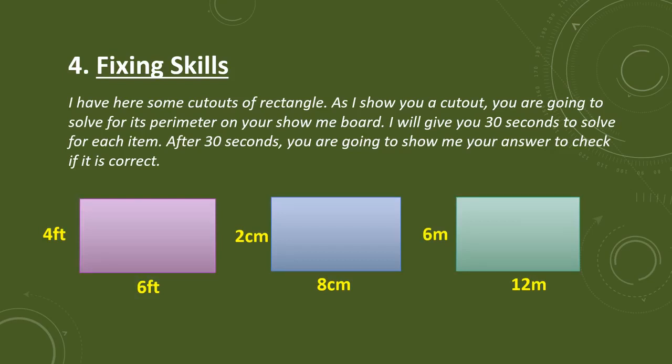And now, the fourth part of the lesson proper is the fixing skills. The teacher will show some rectangular cutouts with measurements to the pupils, and they will be given 30 seconds to solve for each item. The learners will also present their work afterwards. For the first rectangular cutout, the length is 6 feet and the width is 4 feet. For the second, the length is 8 cm and the width is 2 cm. For the third, the width is 6 meters and the length is 12 meters.